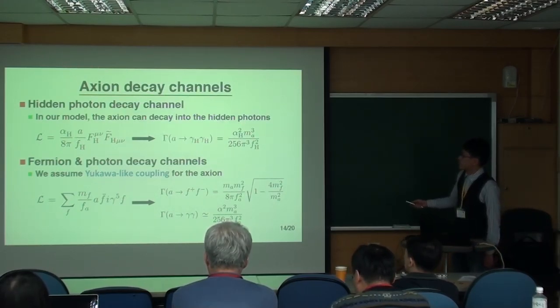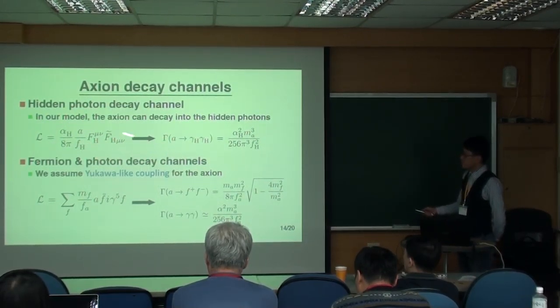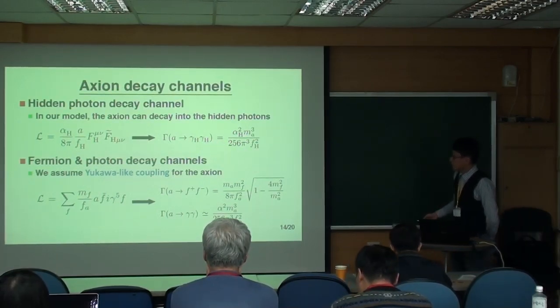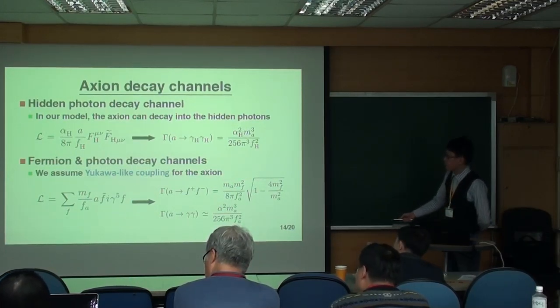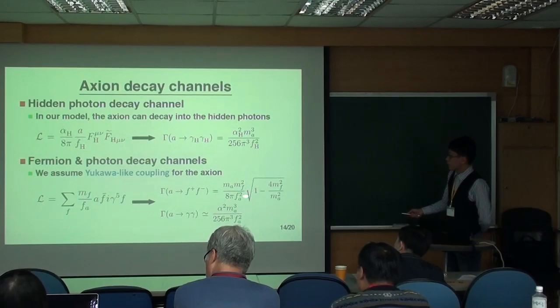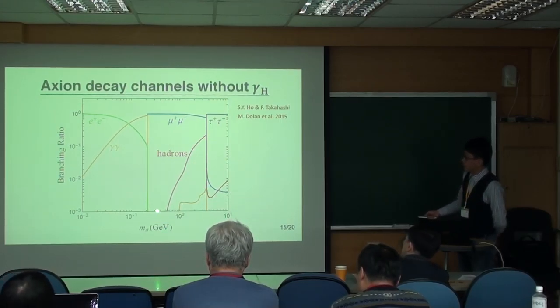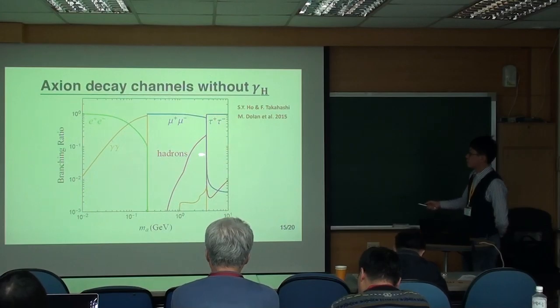So before I talk about the constraints from the beam-dump experiment, let me discuss the axion decay channel in this model. Because in our model, we introduced this axion-photon coupling. And actually this axion can decay into the hidden photon like this. We also assume a coupling for the axion like this. So the axion can also decay into standard model fermions and visible photons.